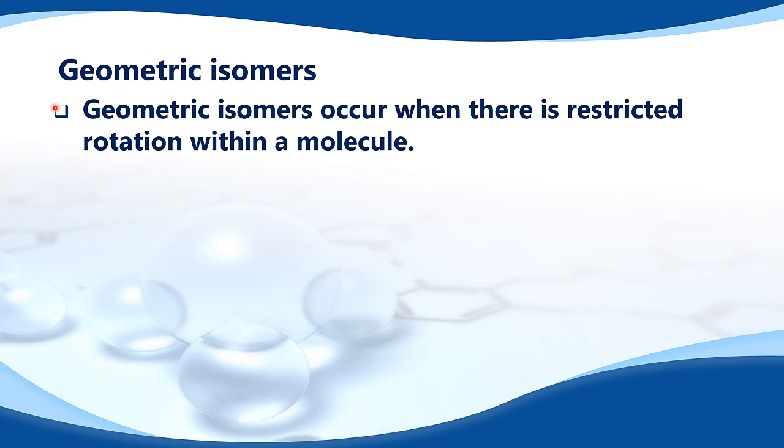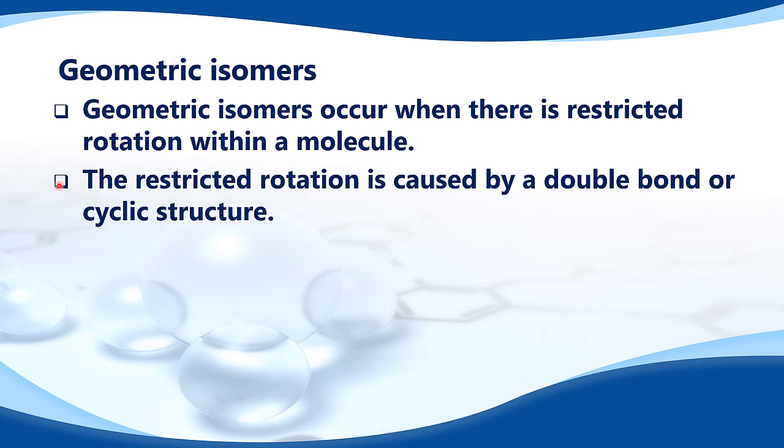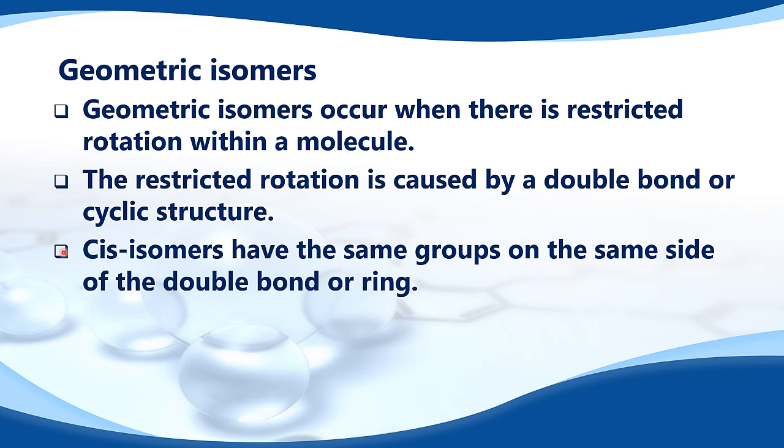Geometric isomers. Geometric isomers occur when there is restricted rotation within a molecule. The restricted rotation is caused by a double bond or cyclic structure. Cis isomers have the same groups on the same side of the double bond or ring.